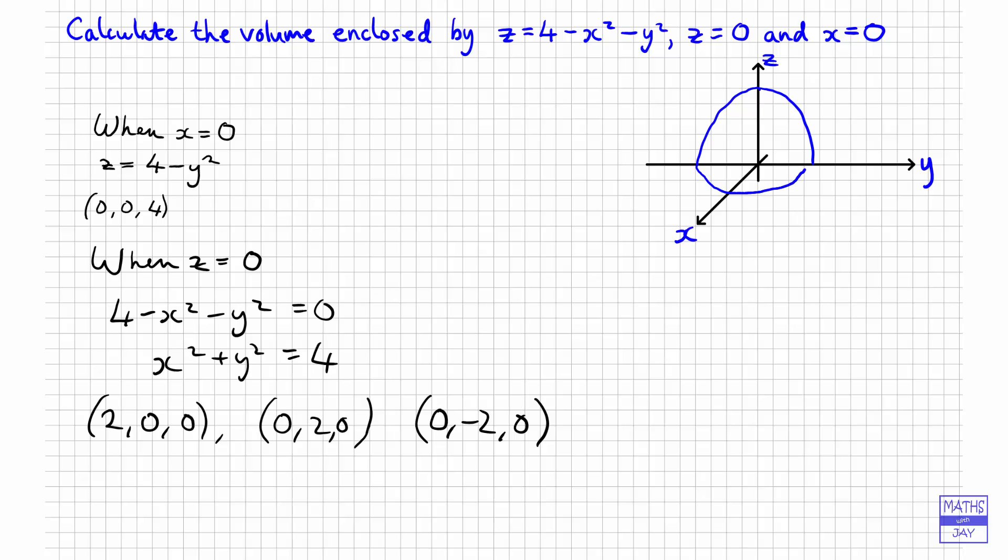This kind of thing going on. So we'll also have another kind of parabola coming out here, well half of one, because we're stopping at the zy plane. So we've got this kind of shape emerging. It's like half a paraboloid, this kind of thing going on.